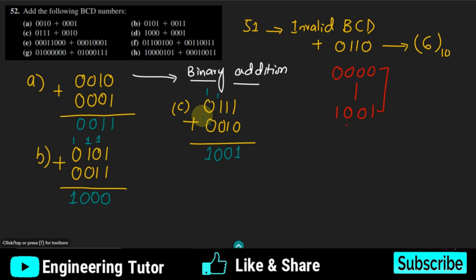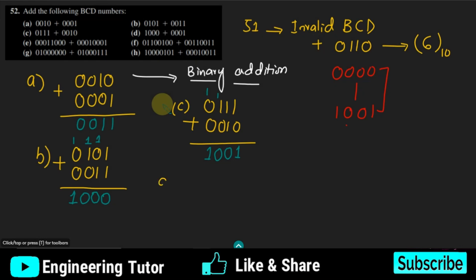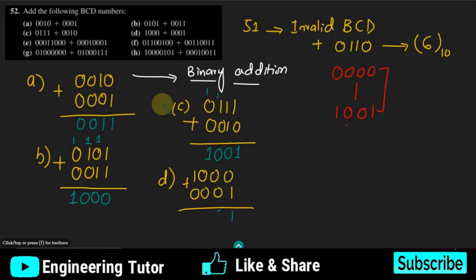For part D, I have 1000 and I have to add 0001. Adding them I get 1001. This is again a valid BCD number. That is the part D of the question.